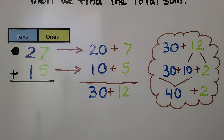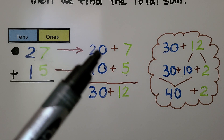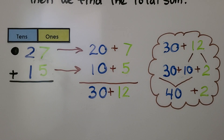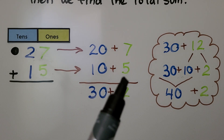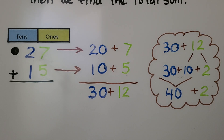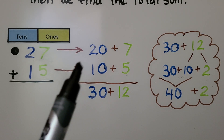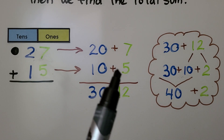For example, 27 plus 15. We write each addend as a sum of its tens and ones: 27 is 20 plus 7, and 15 is 10 plus 5. We find the sum of the tens: 20 plus 10 is 30.